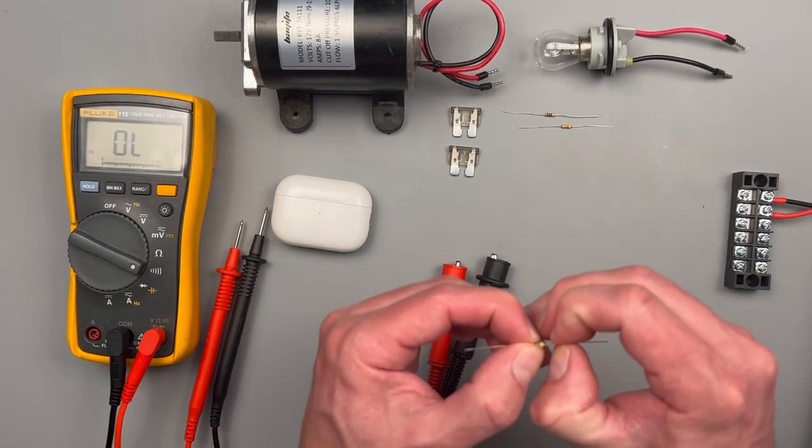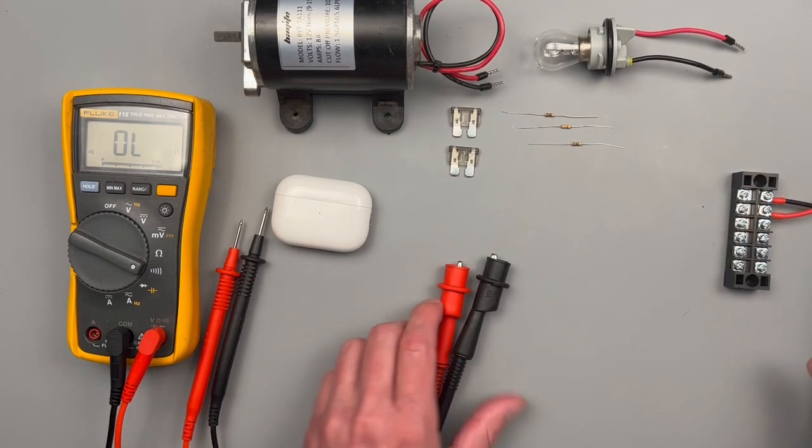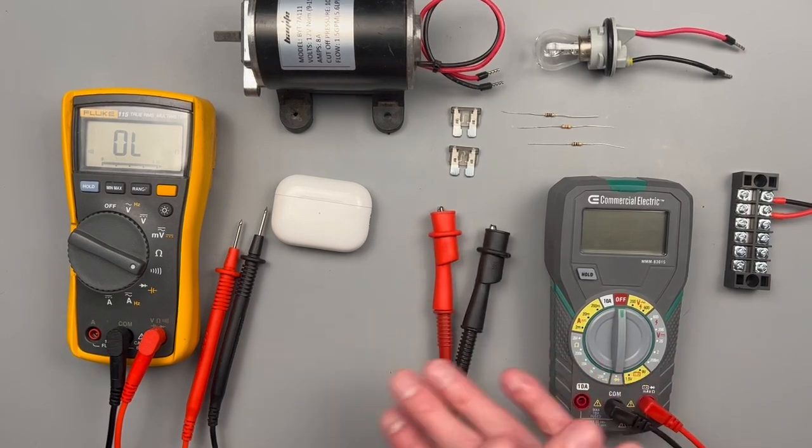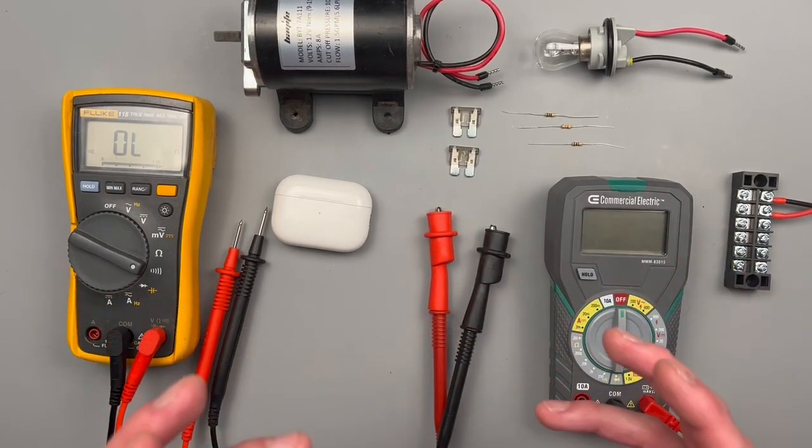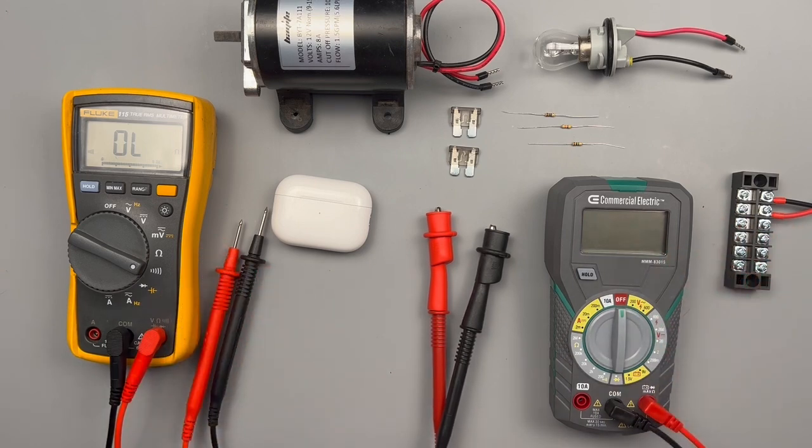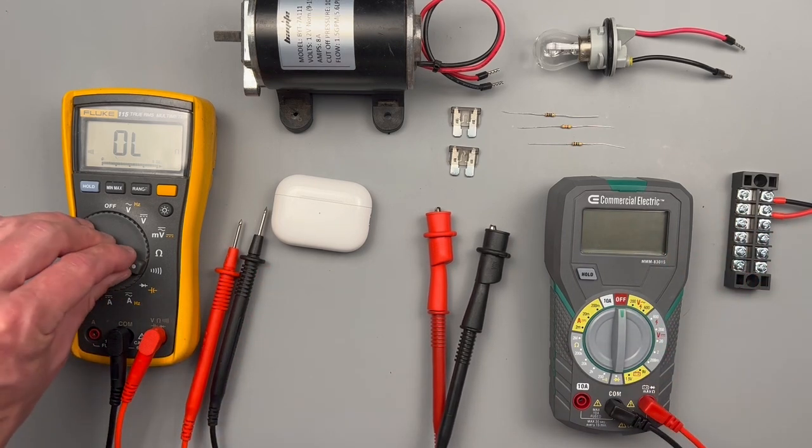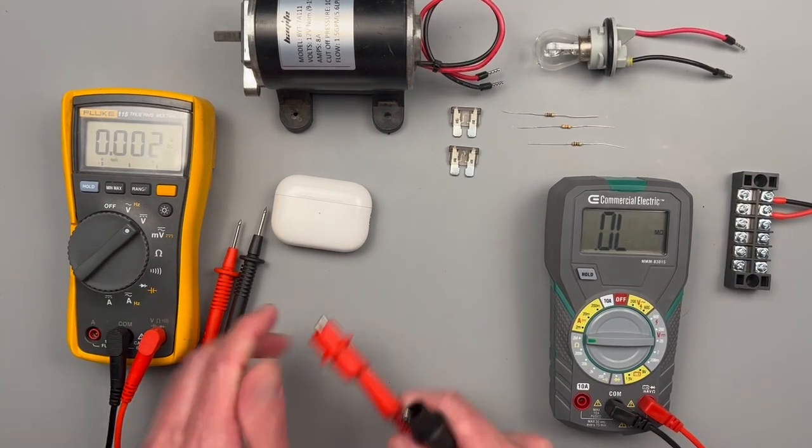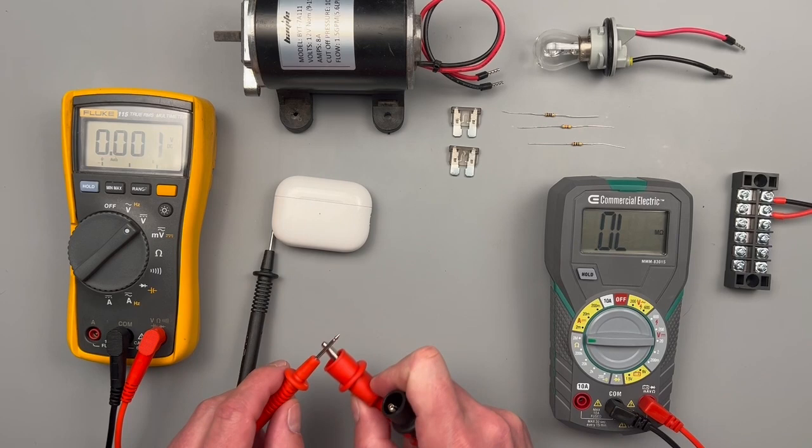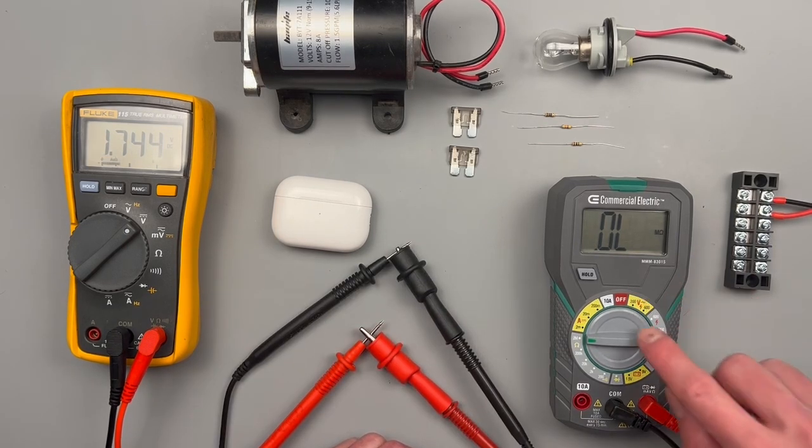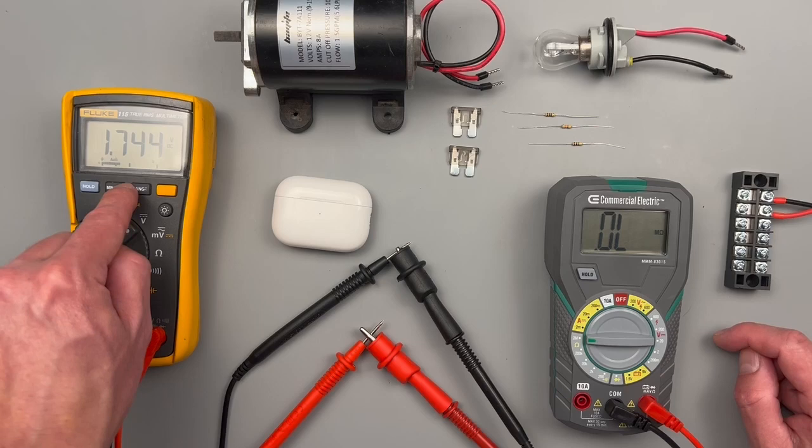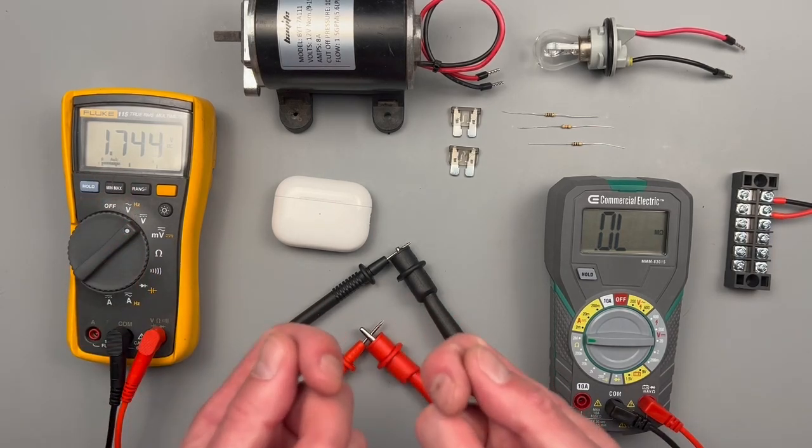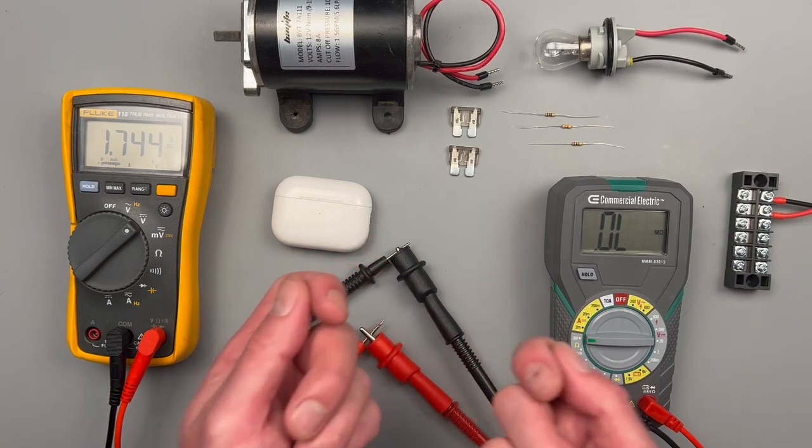The first thing that we want to keep in mind when measuring continuity and resistance is that it needs to be done on a dead circuit. All the power needs to be shut off and disconnected before we make resistive and continuity measurements, and I'll tell you why. When we measure resistance on our meter, we're actually outputting a small amount of voltage. You can see for this meter when it's trying to read a resistive value, it's outputting 1.7 volts DC. So you can't use voltage to measure resistance where there's voltage present.